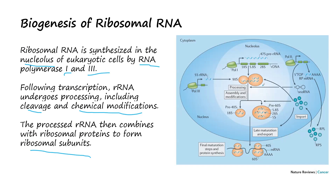The ribosomal RNA is exported from the nucleolus to the cytoplasm. Molecules like RPL and RPS aid the transportation of the ribosome from the nucleus to the cytoplasm.